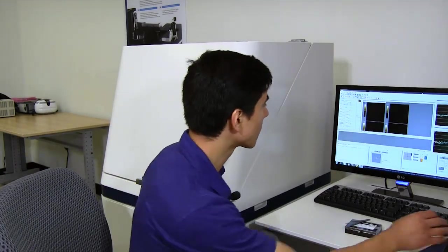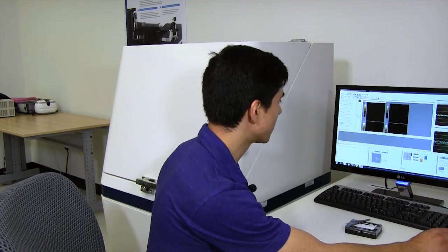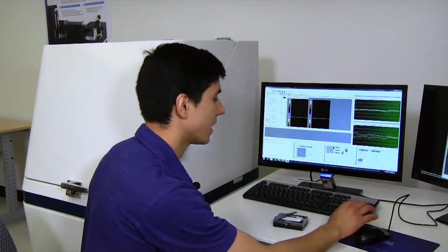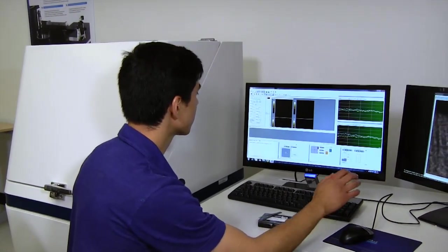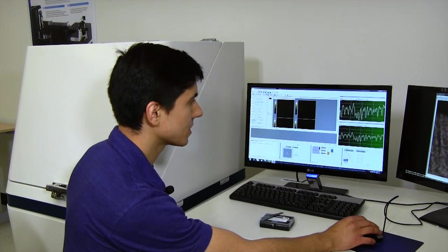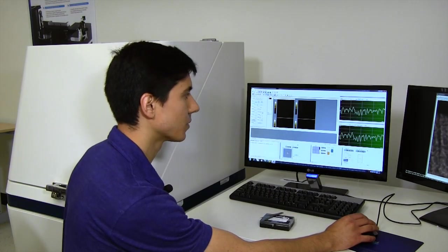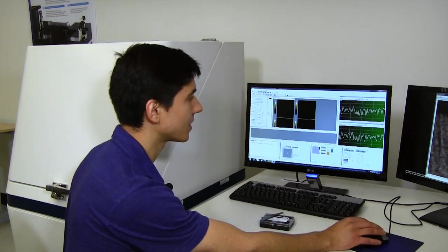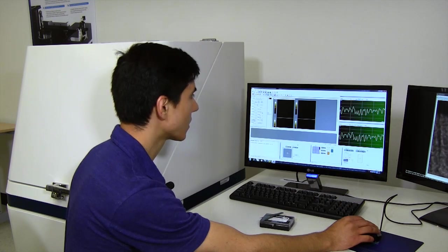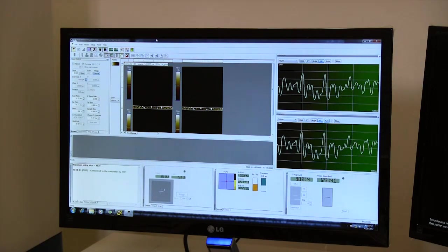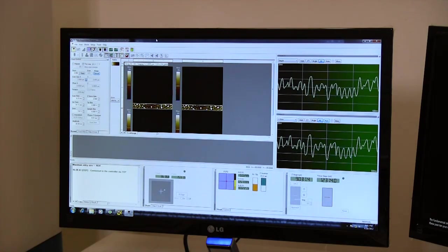Now that the probe has approached the sample surface, enter the parameters for the image we'd like to collect. I can enter a scan size and scan rate, and if needed, adjust the feedback loop parameters that control the probe motion over the sample surface to ensure a good image. When done, I can click start to collect the image.